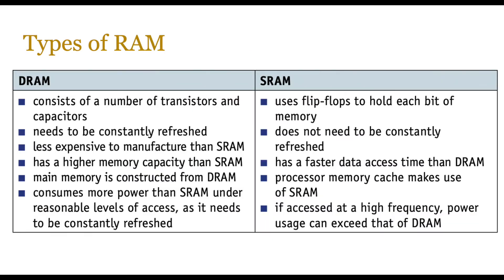Let's compare SRAM and DRAM, the two main types. Starting with DRAM: it consists of a number of transistors and capacitors, it needs to be constantly refreshed, and it's very cheap — less expensive to manufacture than static RAM. It has a higher memory capacity as a result, since it uses cheap materials. Main memory, like RAM, is constructed from DRAM. It consumes more power than static RAM because of the constant refreshing required, which is a disadvantage.